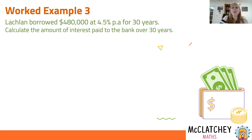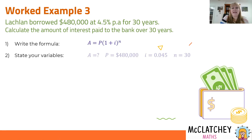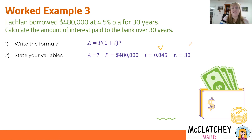Worked example three: Lachlan borrowed $480,000 at 4.5% per annum for 30 years, compounded. Calculate the amount of interest paid to the bank over 30 years. An important note: the interest rate has a decimal in it but it's still a percentage — you still need to divide 4.5 by 100 to convert it to a decimal. As before, write the formula, then state your variables: P = $480,000; I = 0.045; N = 30.